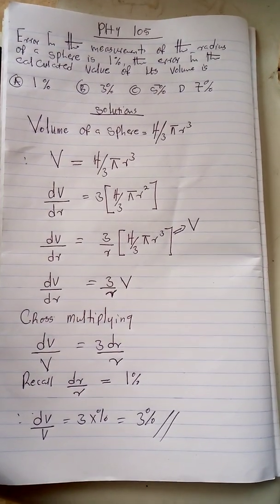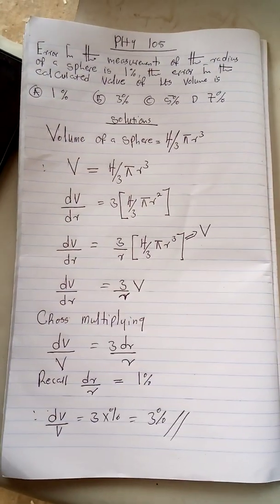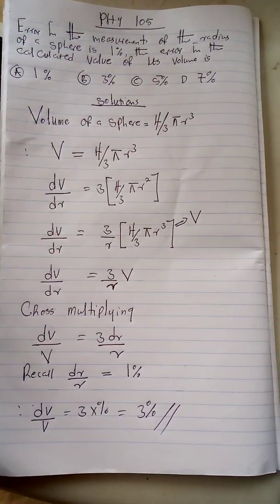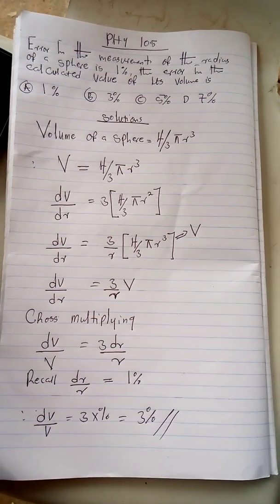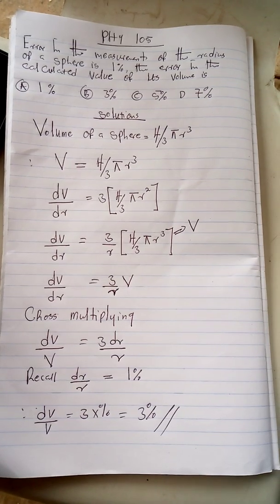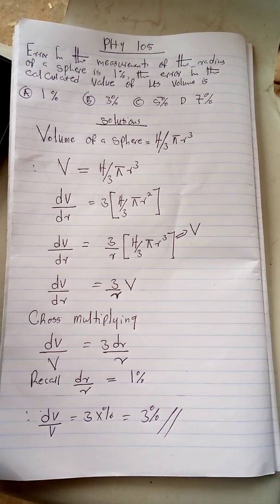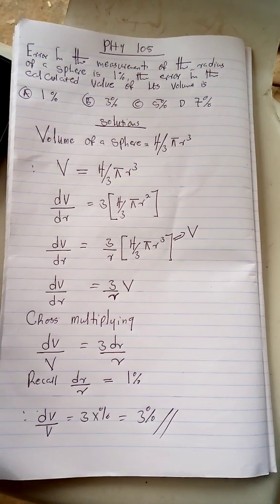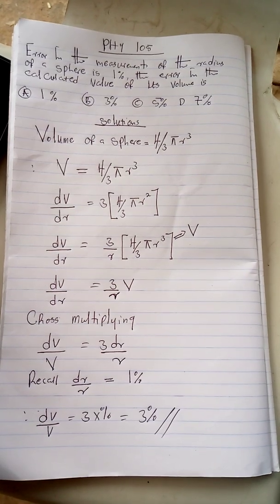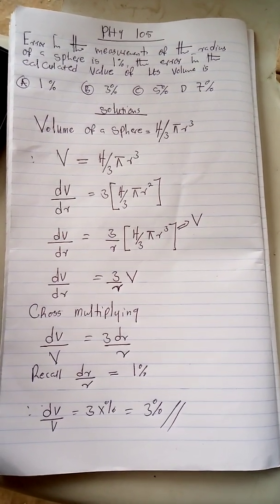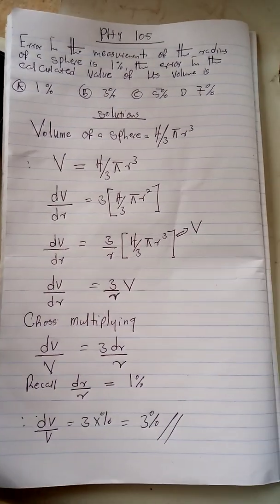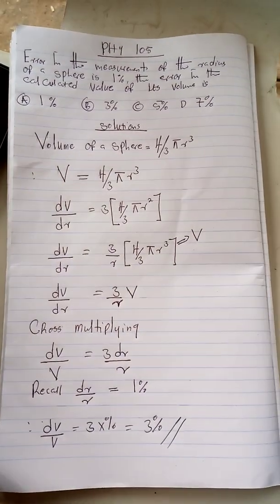I'll be showing you the best approach in solving this question, particularly when you are given a sphere and you are asked to look for the error in the volume. Now for all spheres, you know the volume of the sphere is 4 over 3 pi r cubed.